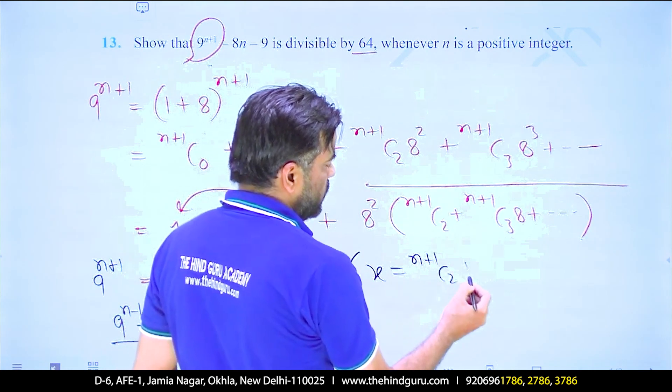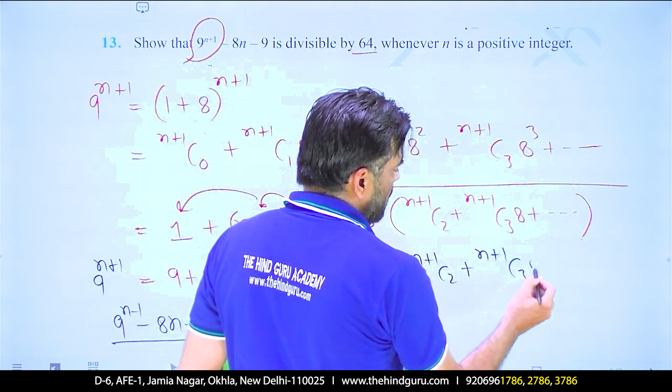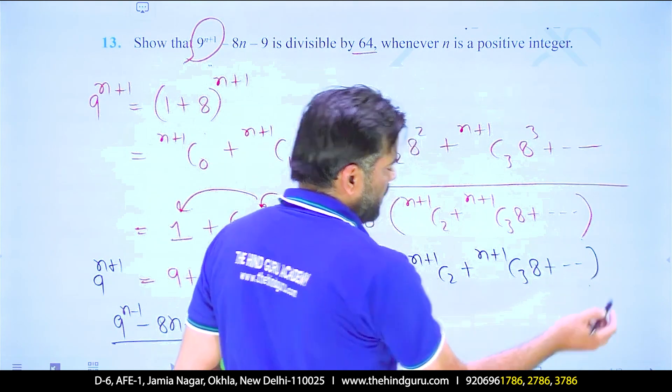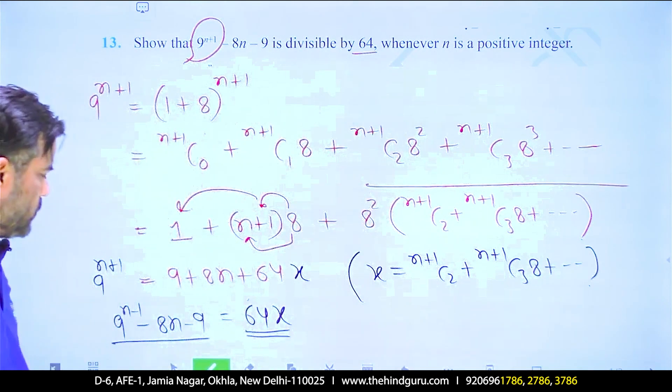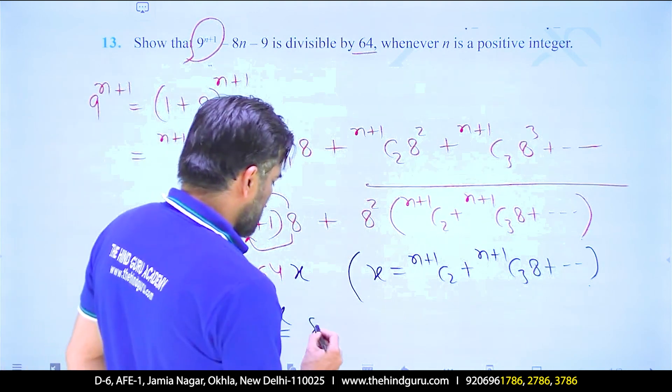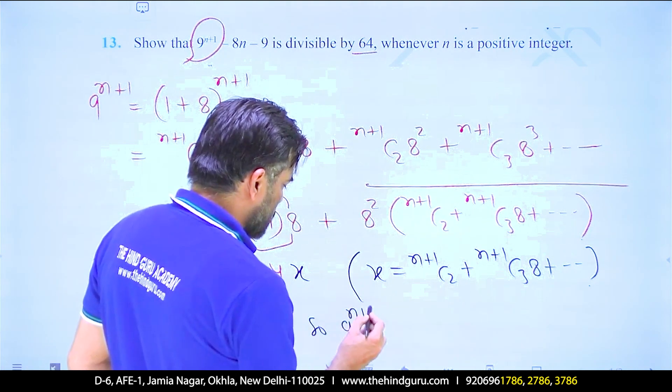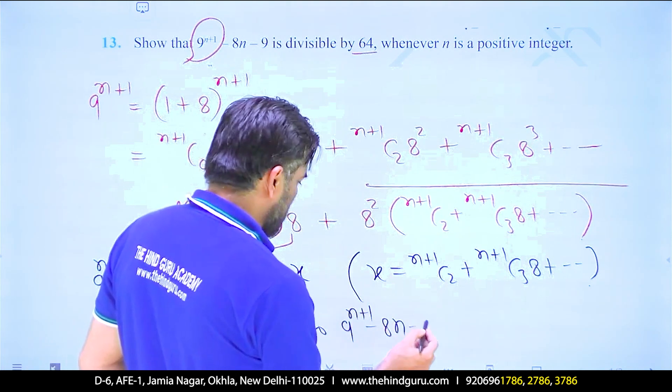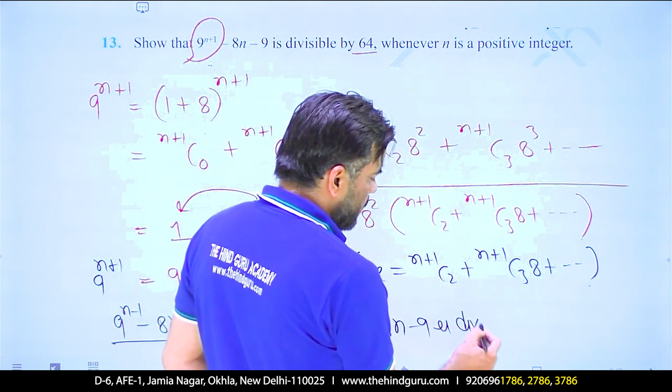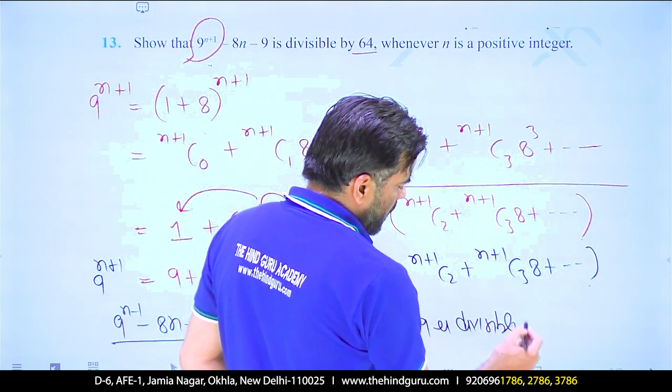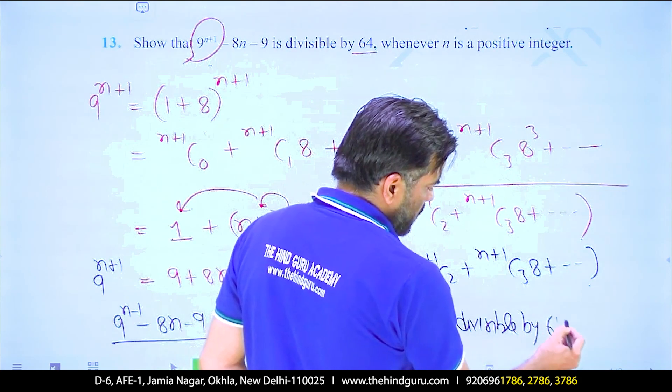We had x equal to n plus 1 choose 2, n plus 1 choose 3, and so on. So 9 to the power n plus 1 minus 8n minus 9 is completely divisible by 64.